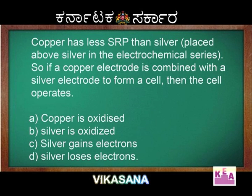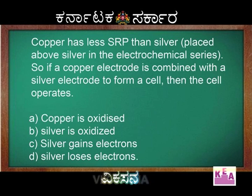Copper has less SRP than silver. So, if a copper electrode is combined with a silver electrode to form the cell, the cell operates.